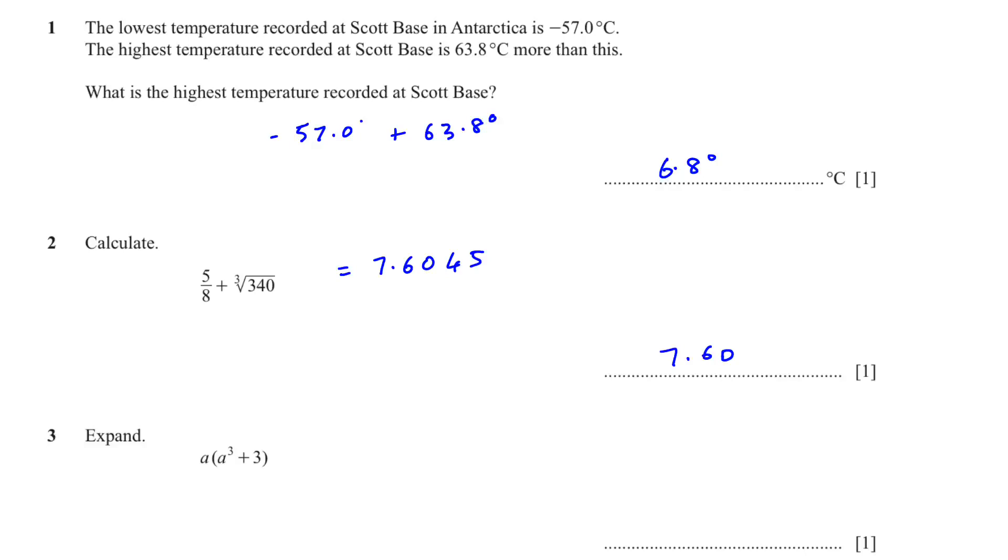Next, expand a(a³ + 3). When we are expanding variables with a bracket a to the power of 3, we add the powers. If you cannot see any power it means there is a 1. So when you are multiplying a with a³, the answer you will get is a⁴ because we add the powers, and then a times plus 3 is plus 3a.